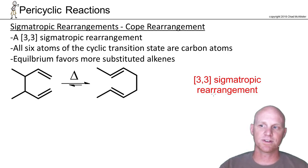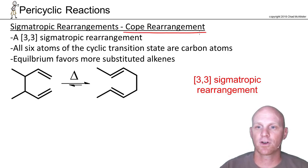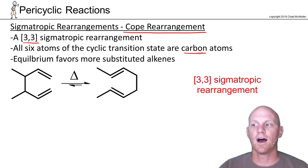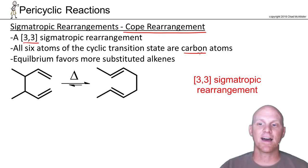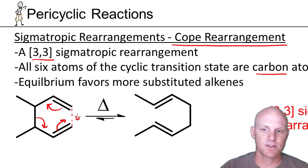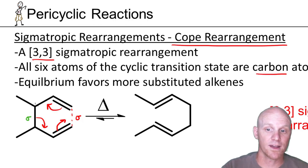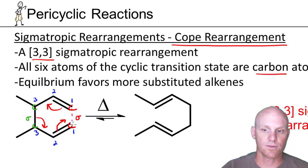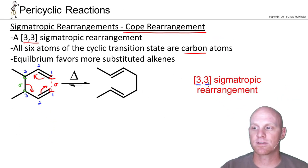Probably the most common sigmatropic rearrangement is the COPE rearrangement, which is a 3,3 sigmatropic rearrangement. All six atoms in the cyclic transition state are carbons. There's also a Claisen rearrangement — also a 3,3 sigmatropic rearrangement — but one of the atoms in the ring will be an oxygen. In the COPE, they're all carbons. Following the cyclic movement of electrons, we form a new sigma bond here. The old bond we're breaking is between these carbons; the new one forming is between these carbons. Counting on each side: 1, 2, 3 from forming to breaking, and 1, 2, 3 on the other side — that's what makes it a 3,3 sigmatropic rearrangement.